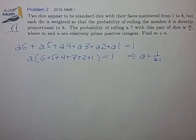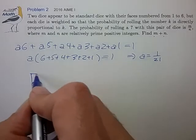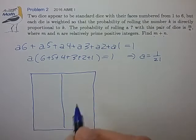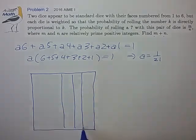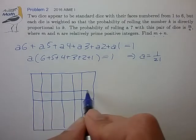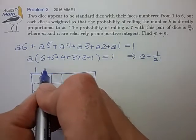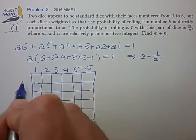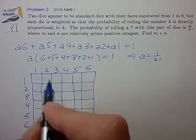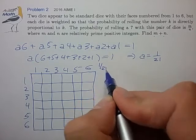So now we can write out our standard probability table for these two die. Let's do that. So we have a number of dies 1, 2, 3, 4, 5, and 6 for die number 1, die number 2, and each of these probabilities is multiplied by the scale factor 1 over 21.